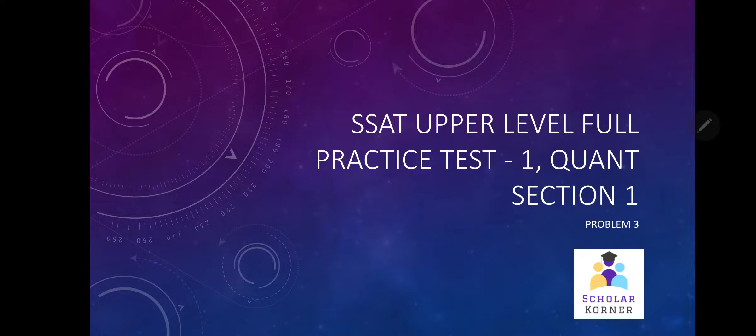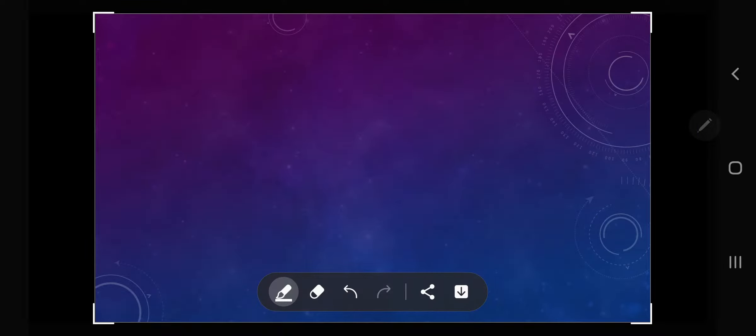Problem number three is pretty easy, however it can be quite time-consuming and trip you up. Therefore let's go about solving this problem a little bit smartly. We are told that the volume of the prism is 288 cubic meters and we have to find the dimensions.